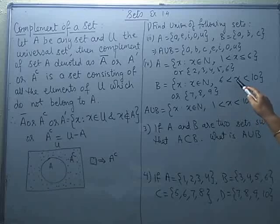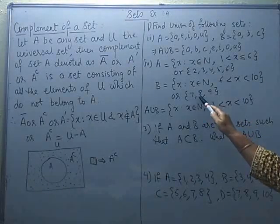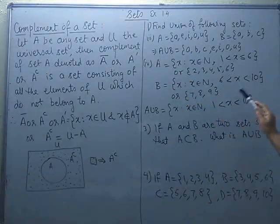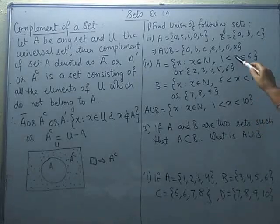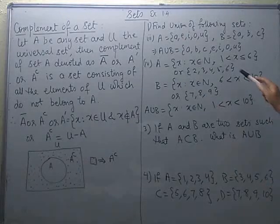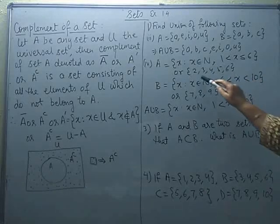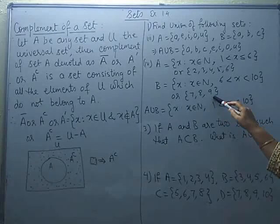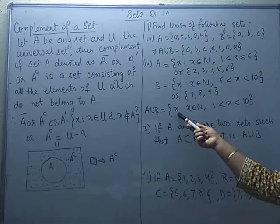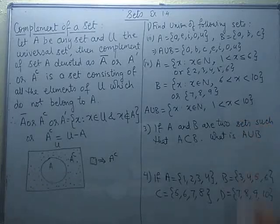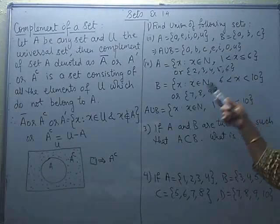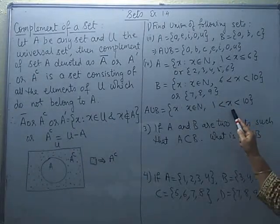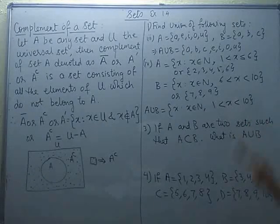Moving on to set B, it contains natural numbers which are strictly greater than 6 and strictly less than 10 — more than 6 but less than 10 — so X can take values 7, 8, 9. We have to write the union of these two. Combining them, X is greater than 1 and less than or equal to 6 for A, and B contains numbers greater than 6 but less than 10. So the union gives all numbers 2, 3, 4, 5, 6, 7, 8, 9. This can be written as: A union B is the set of X where X is a natural number, X is strictly greater than 1 and strictly less than 10, or equivalently X is greater than or equal to 2 and less than or equal to 9.